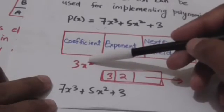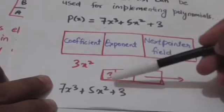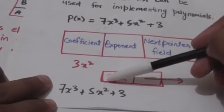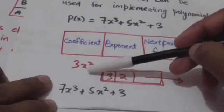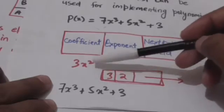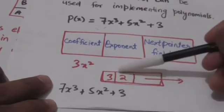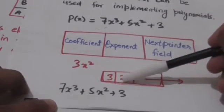Here the coefficient of x² is 3, so the coefficient part of the node contains the value 3. Here the power of variable x is 2, so the exponent part of the node contains the value 2.